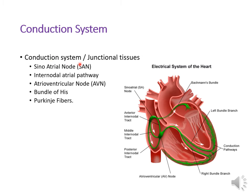The tissues of the conduction system are also known as junctional tissues. They include the SA node (sinoatrial node), located in the right atrium near the opening of the superior vena cava, and the AV node (atrioventricular node), located between the right atrium and the right ventricle. Connecting the SA node and the AV node are the internodal tracts — anterior, middle, and posterior.